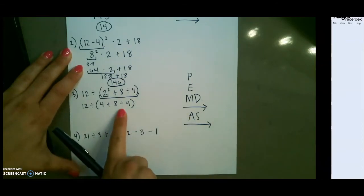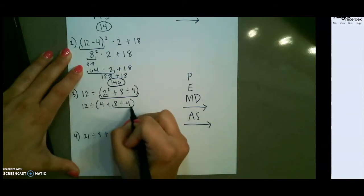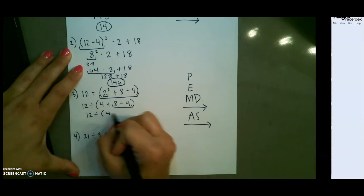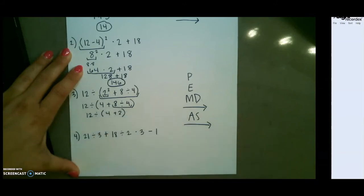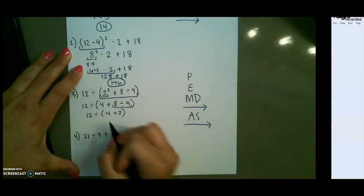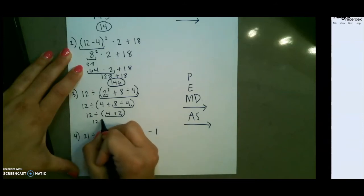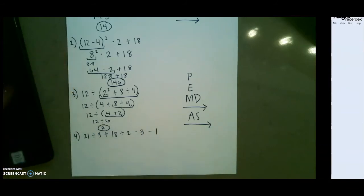Next, I want to do division. 8 divided by 4 is going to give me 2, and we still have our parentheses here. Next, 4 plus 2 is 6, and we are done with our parentheses. So 12 divided by 6 is 2.